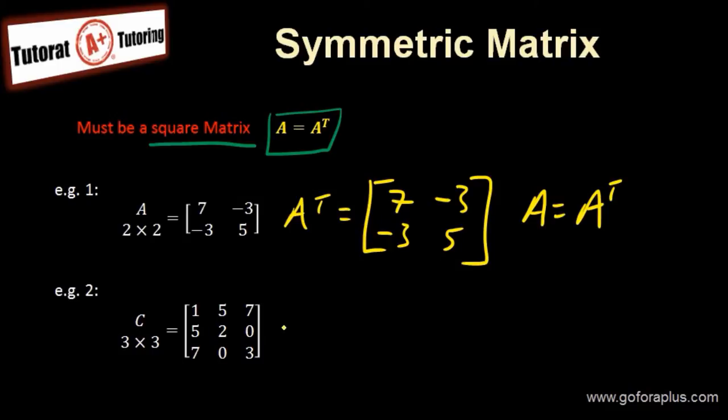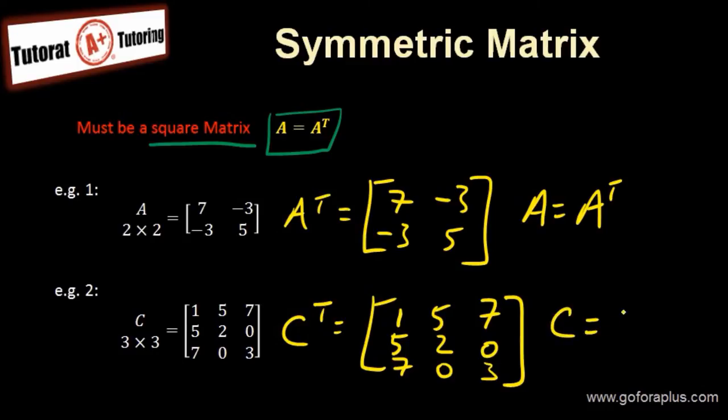Now look at example 2. The transpose of C is equal to the first row equals the first column. Second row is the second column. Last row is the last column. As we can see, the transpose of this matrix is the same, so C equals C transpose.